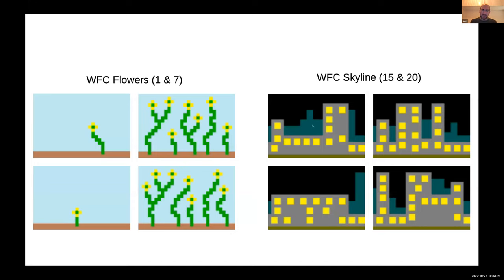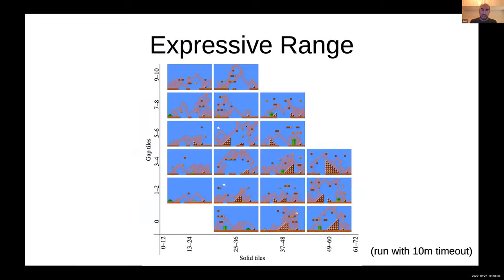These are examples from wave function collapse, but you can layer more constraints on them, like how much you want in each thing, how many flowers you want, how many windows you want.